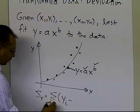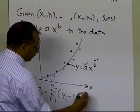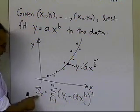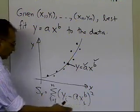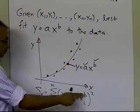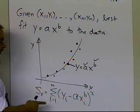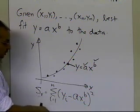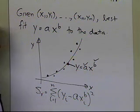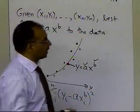The sum of the square of the residuals is the observed value minus the predicted value, squared. When you try to find the minimum of Sr by taking the derivative with respect to a and b and setting those equal to zero, you get two simultaneous nonlinear equations. To avoid solving simultaneous nonlinear equations, we transform the data.